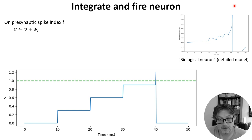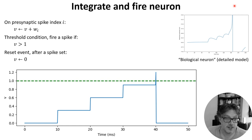Firstly, when you receive an incoming spike, set the variable V to be V plus Wi. If the threshold condition V greater than 1 is true, fire a spike, and after a spike, set V to 0.